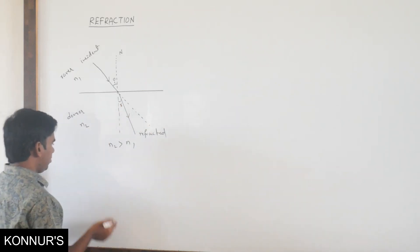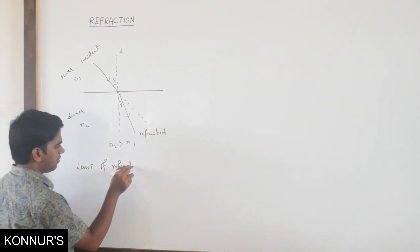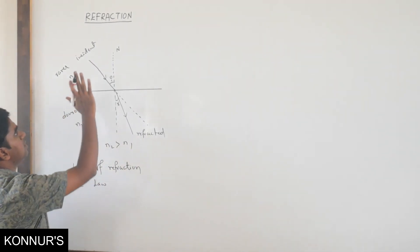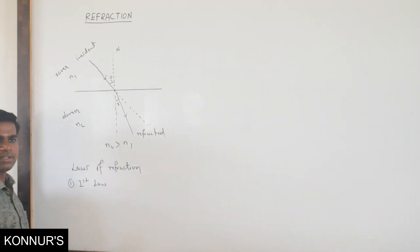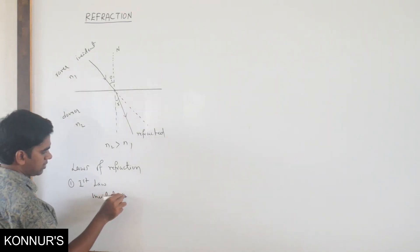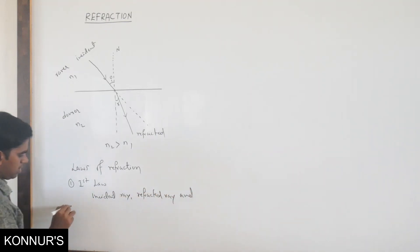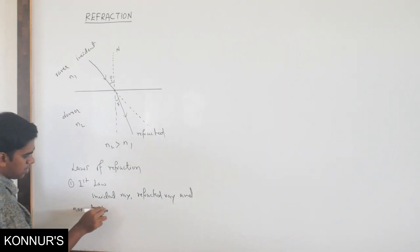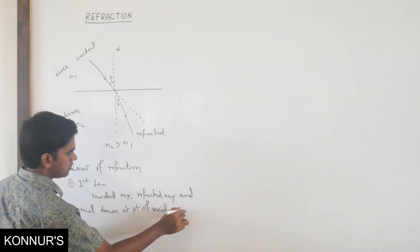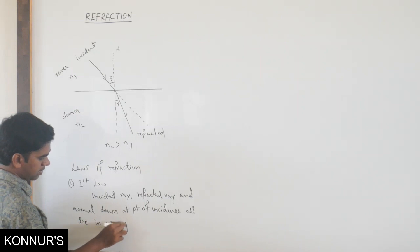With the help of this diagram, we will discuss about the laws of refraction. The first law suggests that the incident ray, refracted ray, and normal drawn at a point of incidence all lie in the same plane.